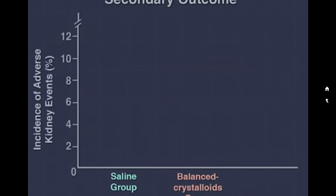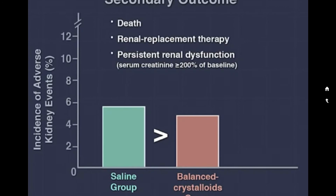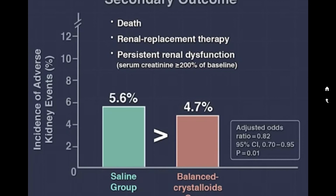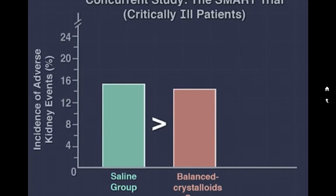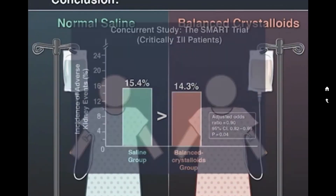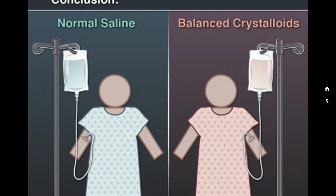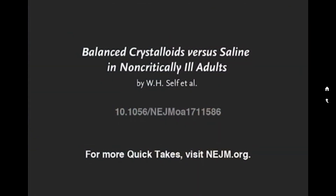Patients in the balanced crystalloids group had a lower incidence of the secondary outcome of major adverse kidney events within 30 days — a composite of death, renal replacement therapy, and persistent renal dysfunction — at 4.7% versus 5.6%. A concurrent study among critically ill patients also showed a reduction in major adverse kidney events within 30 days: 14.3% with balanced crystalloids versus 15.4% with saline. The authors conclude that among non-critically ill adults, balanced crystalloids and saline resulted in no difference in hospital-free days. Full trial results are available at NEJM.org.